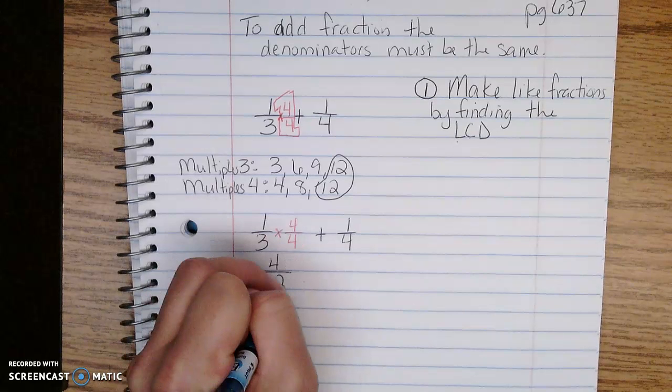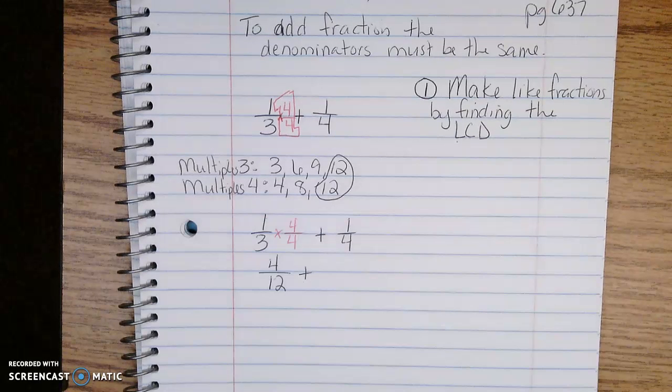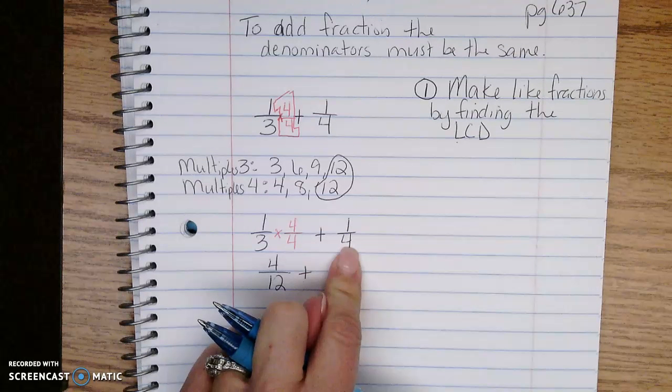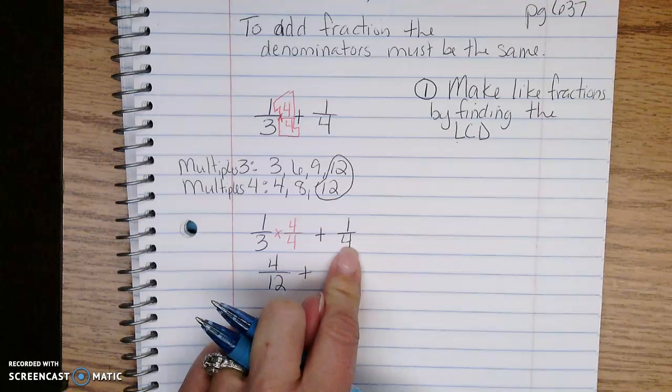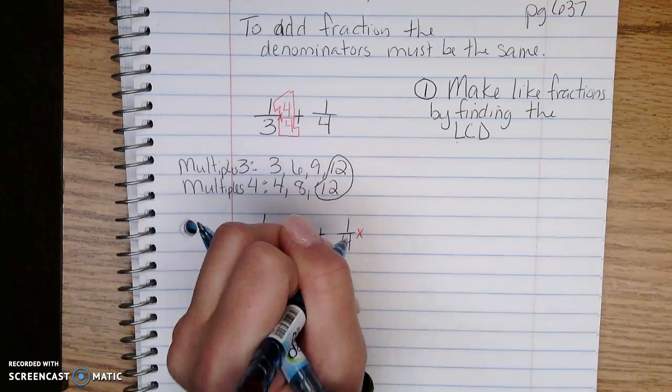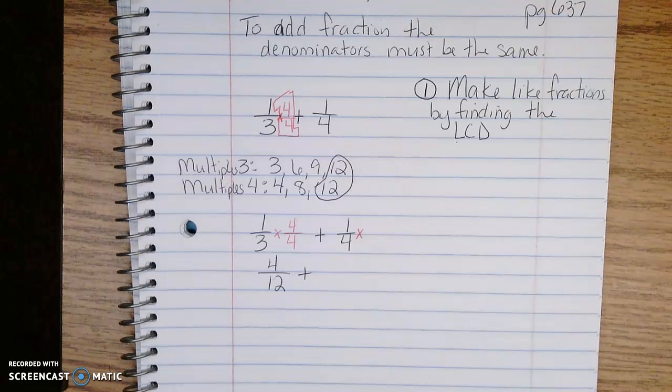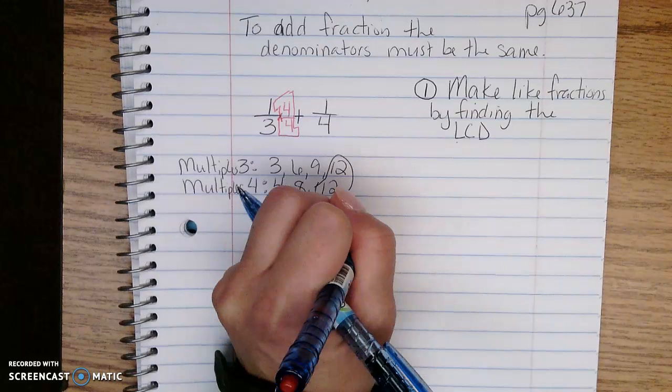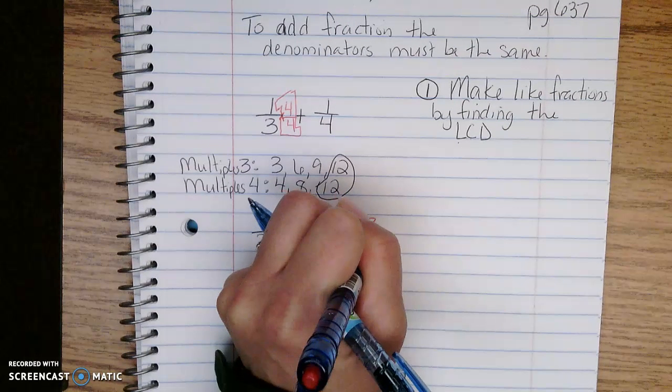I'm going to take my 1/4. How do I turn a 4 into a 12? I multiply it by 3, which means I multiply my entire fraction by 3 over 3.